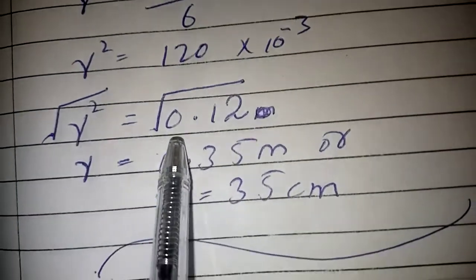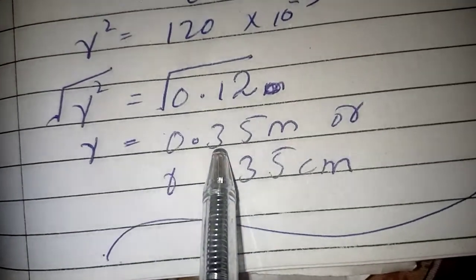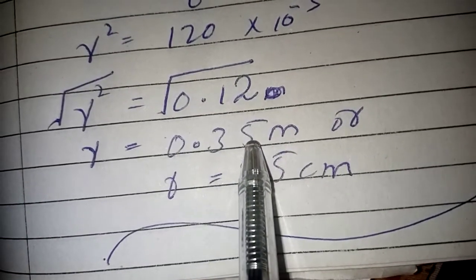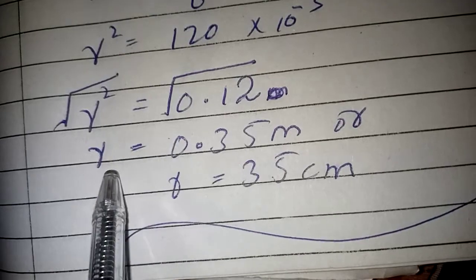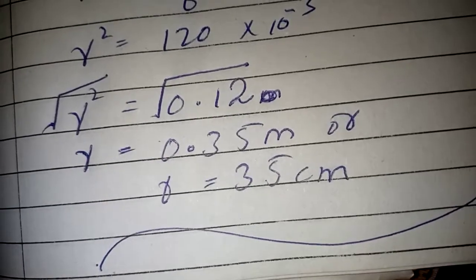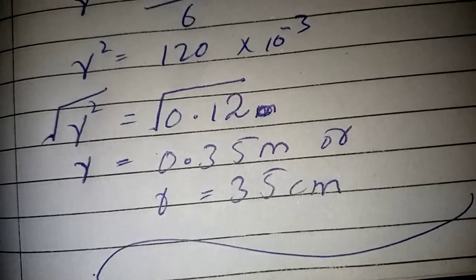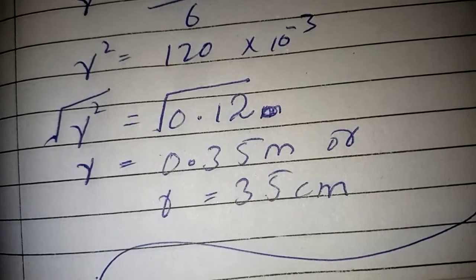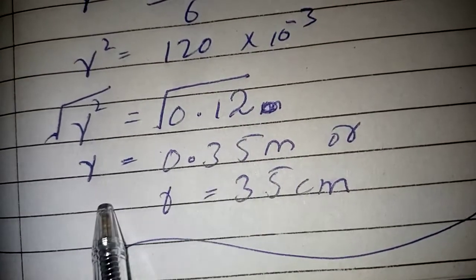Taking the square root, r value comes out to be 0.35 meters. Converting to centimeters, since one meter equals 100 centimeters, we multiply 0.35 by 100, giving us a distance of 35 centimeters.